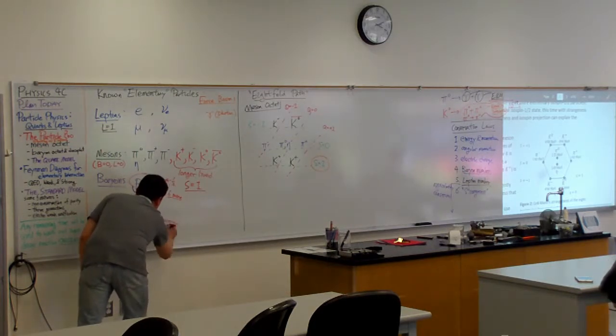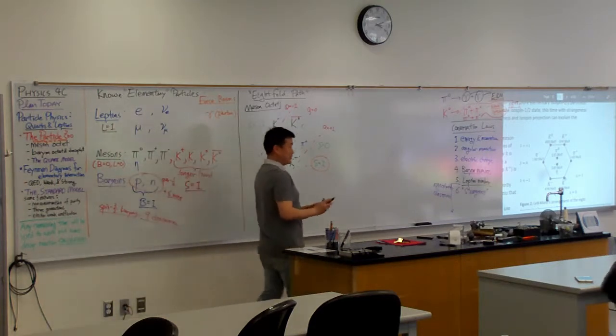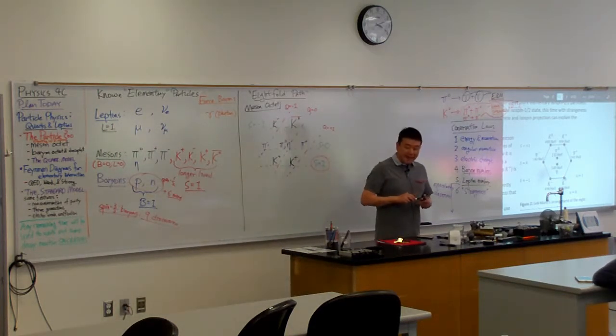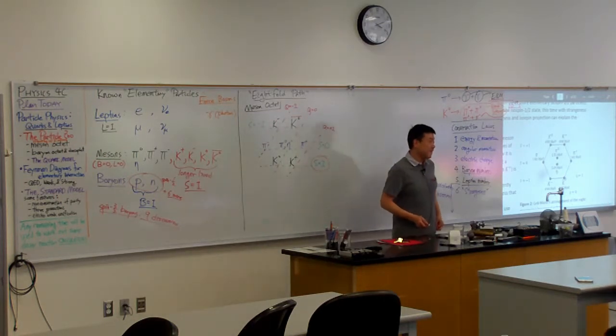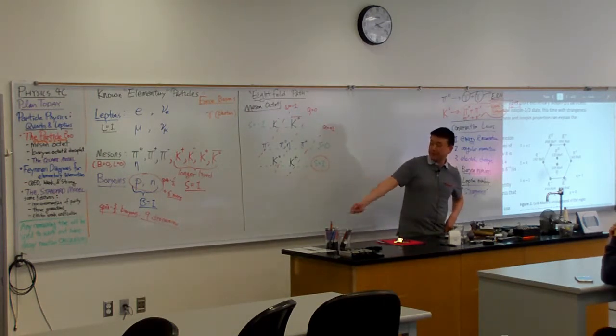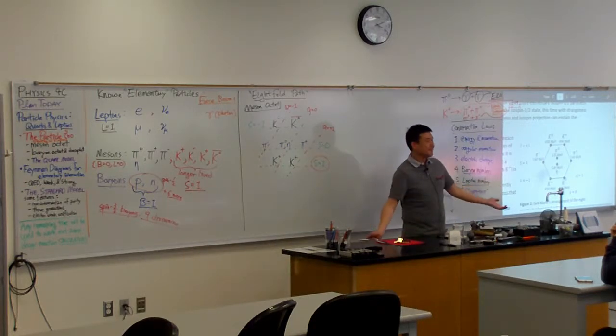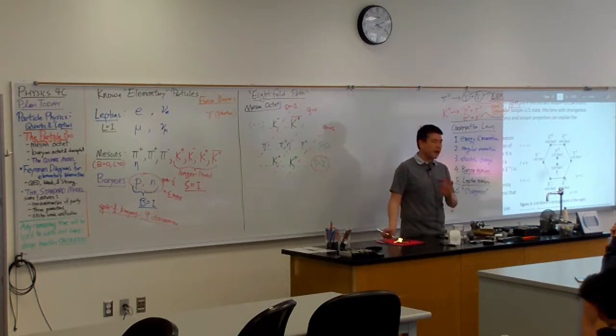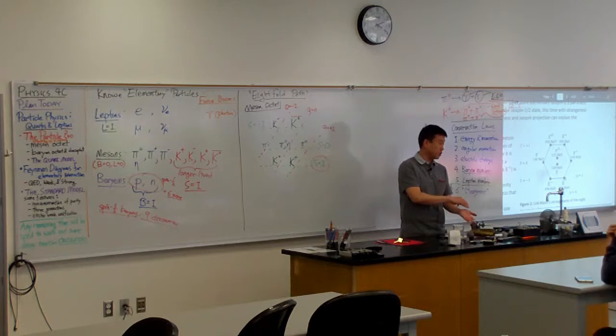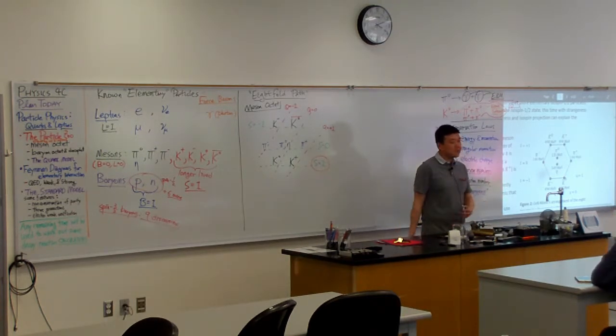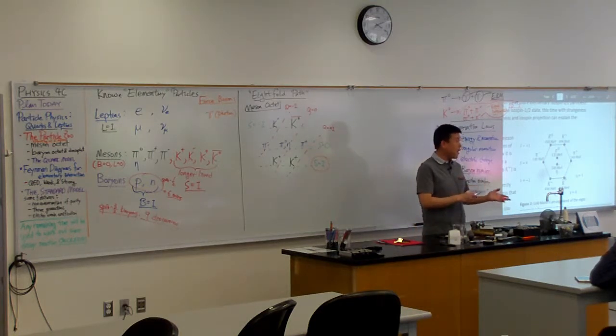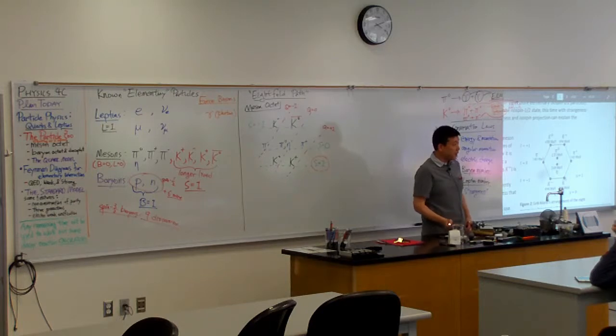So this is what we call the particle zoo. We start out with trying to describe elementary subatomic particles and these start to multiply like elements, indicating there might be some kind of underlying structure. These baryons and mesons that we are looking at, maybe they are not elementary. Maybe they are made up of something more, and it's that underlying structure that they were trying to figure out.